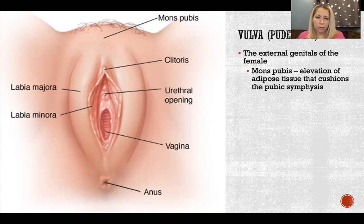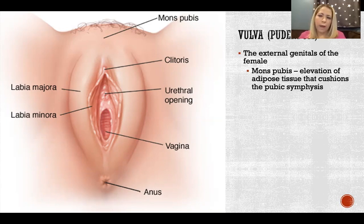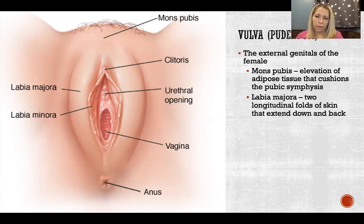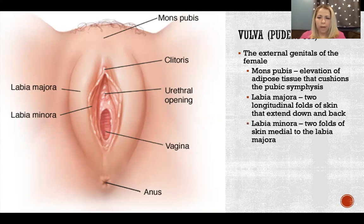The vulva includes all of the structures that are external. That includes the mons pubis — the hill of adipose tissue that covers the pubic symphysis on the anterior side. Then the labia majora are the larger, more lateral lips — two longitudinal folds of skin that extend down and back. The labia minora are the two thinner folds that are medial to the labia majora.